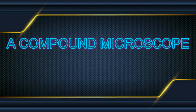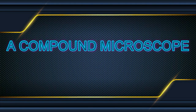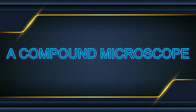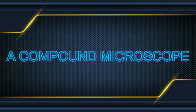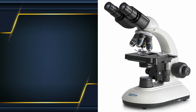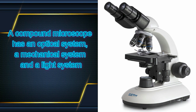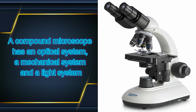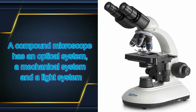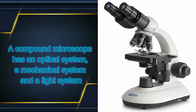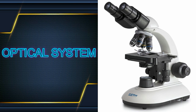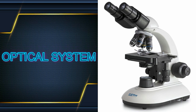A compound microscope is a very important device used in the science laboratory — a device that gives an enlarged picture of tiny objects. A compound microscope has three systems: an optical system, a mechanical system, and a light system. The lenses making up the optical system are usually two or more objective lenses of different magnifying powers.